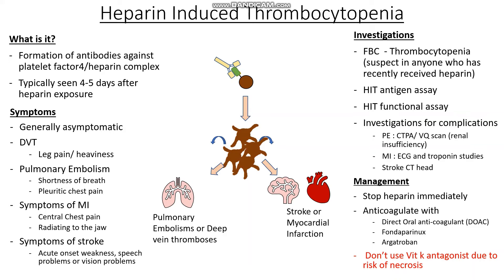That concludes our series on primary haemostasis disorders. We've looked at von Willebrand and now the platelet disorders. In the next video, we're going to be looking at secondary haemostasis — focusing mainly on haemophilia and also what happens when both systems go wrong in a condition known as DIC, or disseminated intravascular coagulation. Exam-style questions will also be included to help consolidate the material.